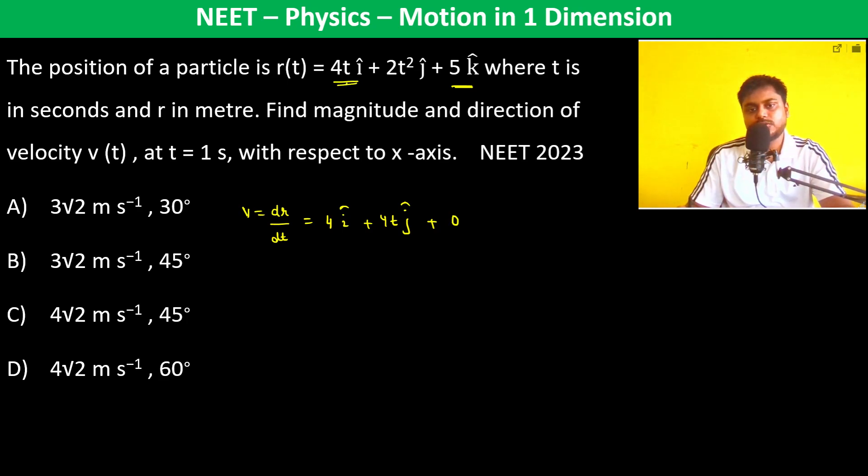The differentiation of 4t is 4, and 2t²'s differentiation is 4t, using the power rule d/dt(x^n) = nx^(n-1).